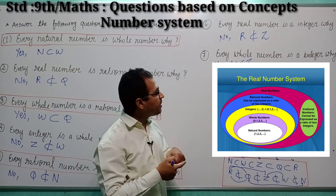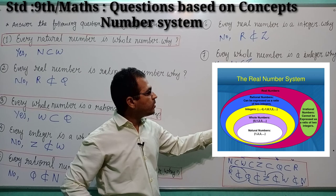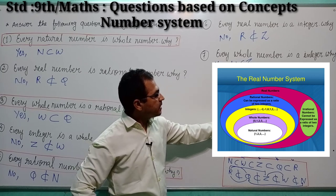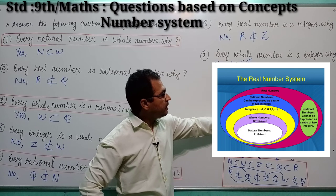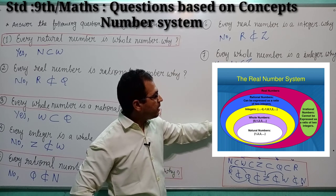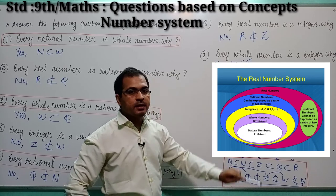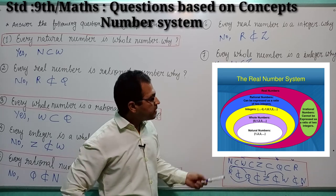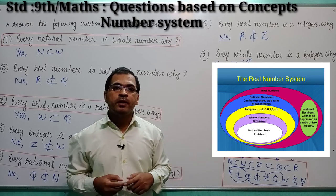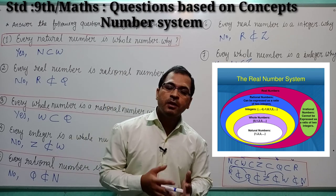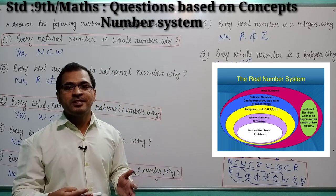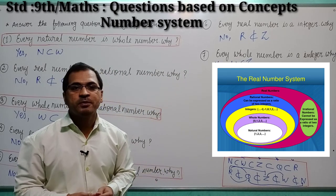From this multiple circle diagram, you can know about the relations between natural, whole, integer, rational, and real numbers. Natural number is included by whole number; whole number is included by rational number; rational number is included by real number. Here is the final touch of these topics. I hope you have understood this video lesson. For more video lessons of this chapter, keep watching your channel Ravi Sarji Maths. Thank you so much.